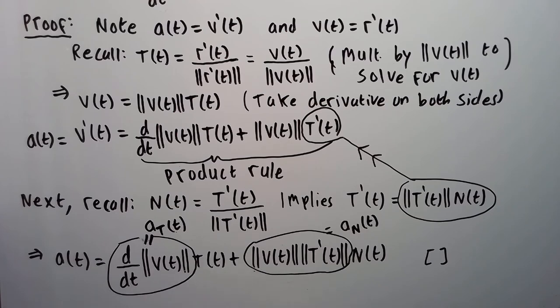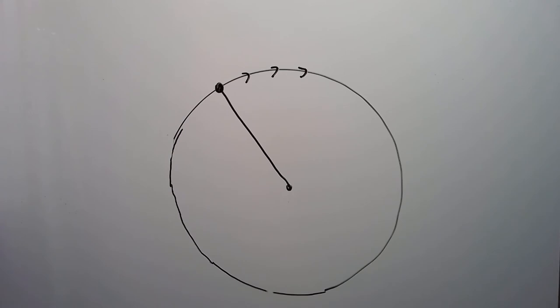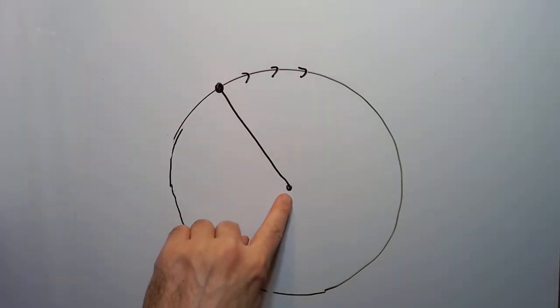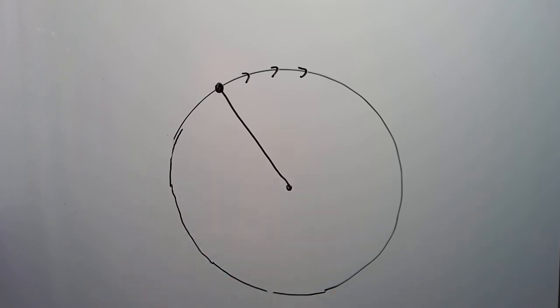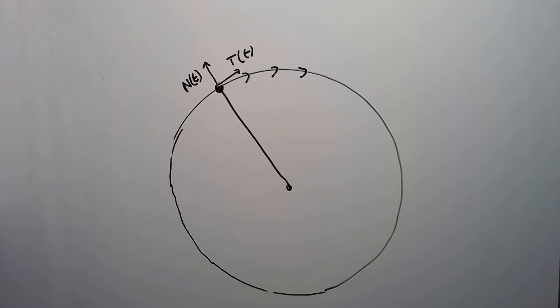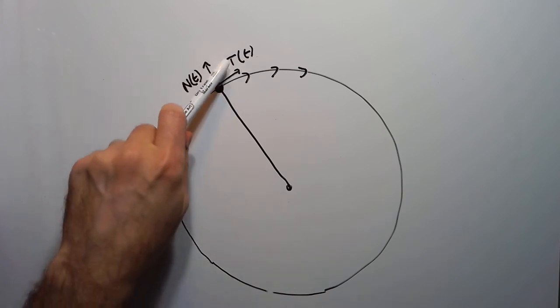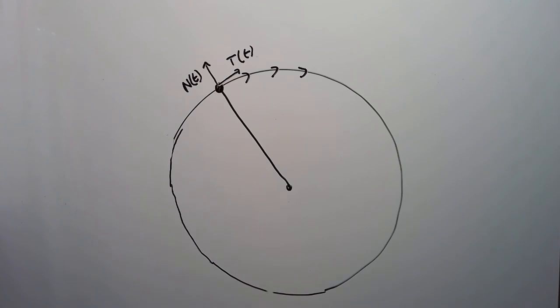Let's draw a picture to visualize what we just proved. Suppose you attach a tennis ball to the end of a rope, stand in the middle, and swing the rope around in a circle. If you swing it faster and faster, you have acceleration in both the tangential and normal directions. The unit tangent vector T and unit normal vector N are perpendicular to each other, since their dot product is zero.